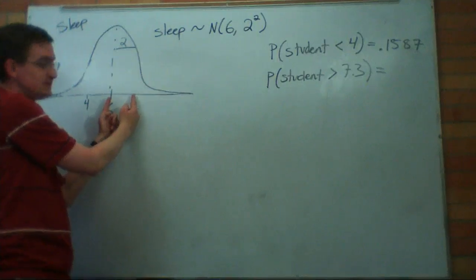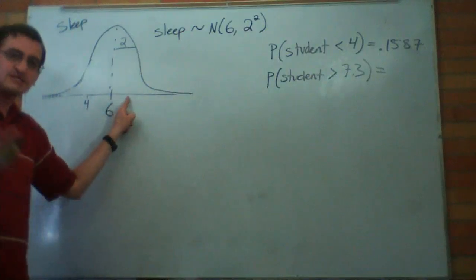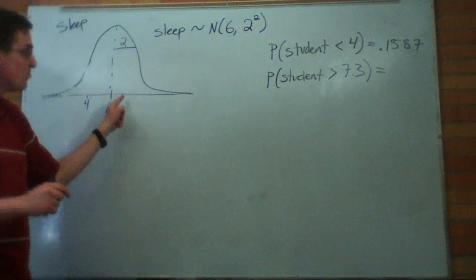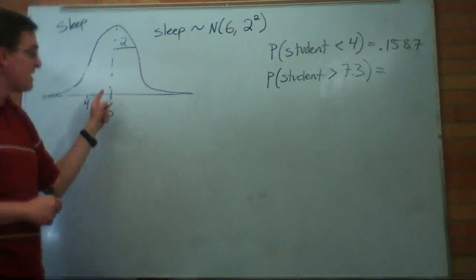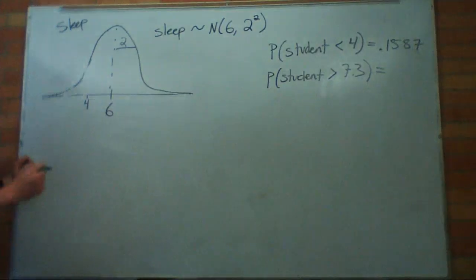So it's just a little bit less than eight. Is it here? I can kind of eyeball it. Let's see if we can get an exact number. Where does 7.3 land? How many standard deviations away is it? That's the question that leads us to a z-score.